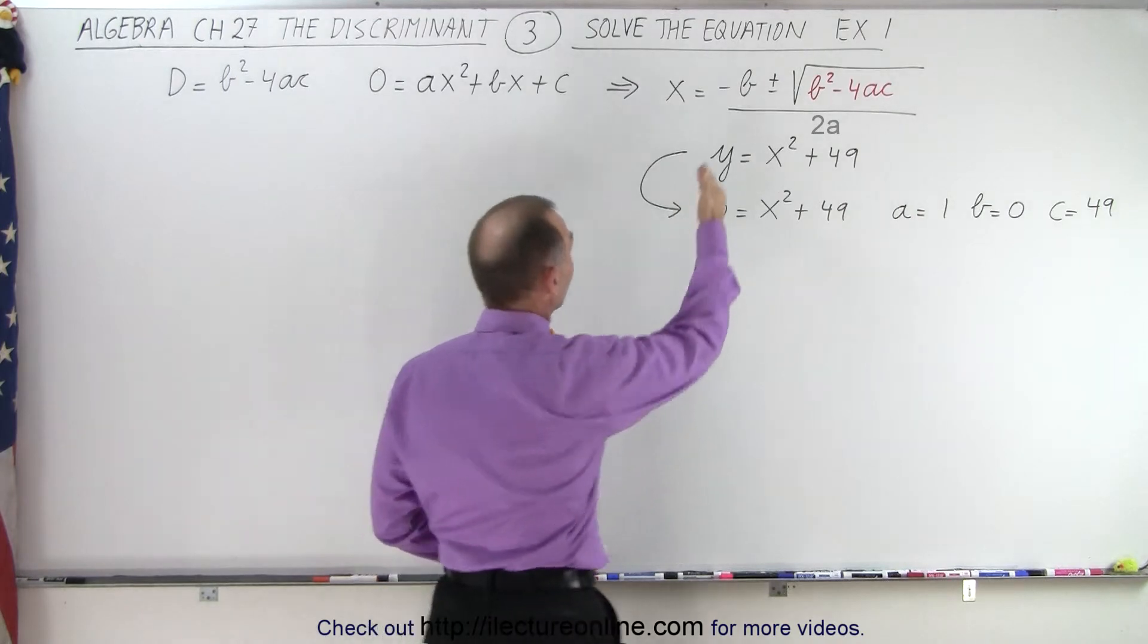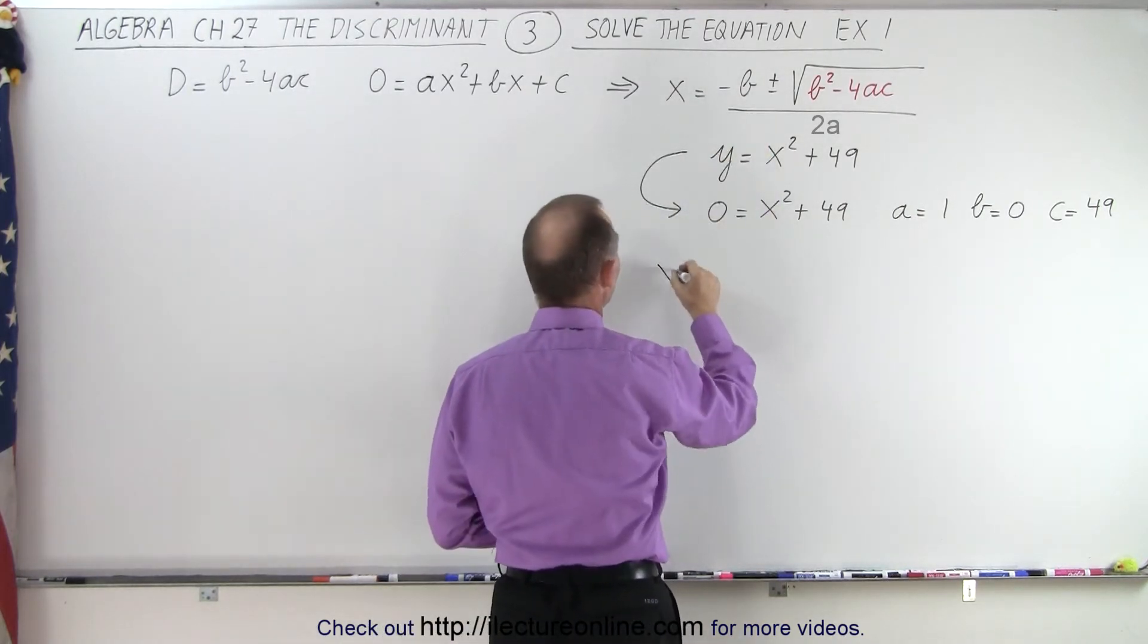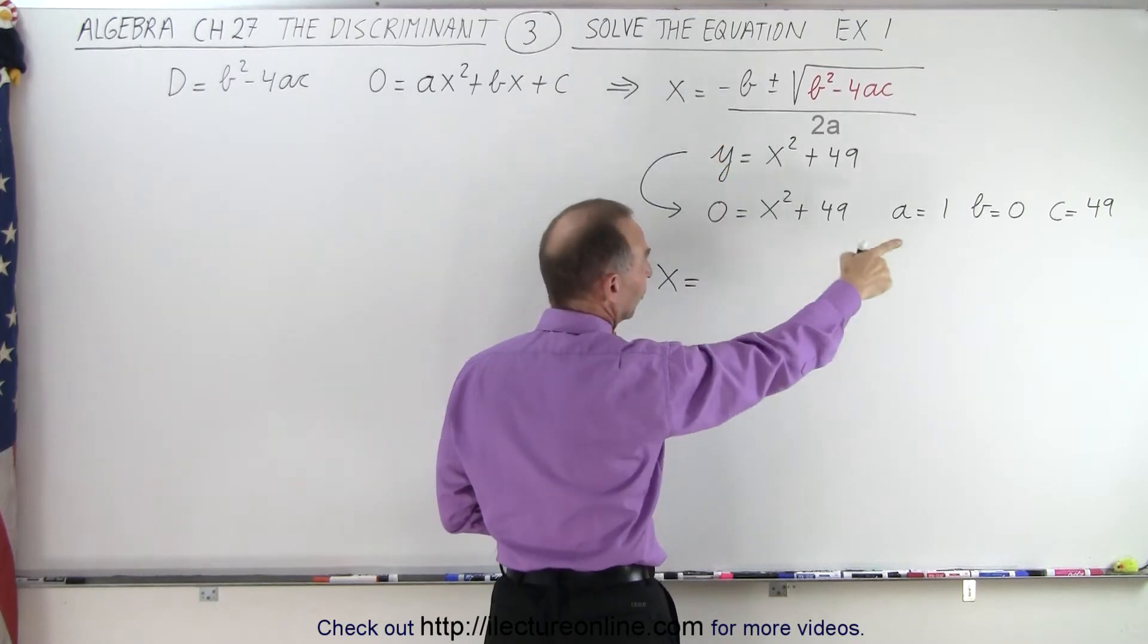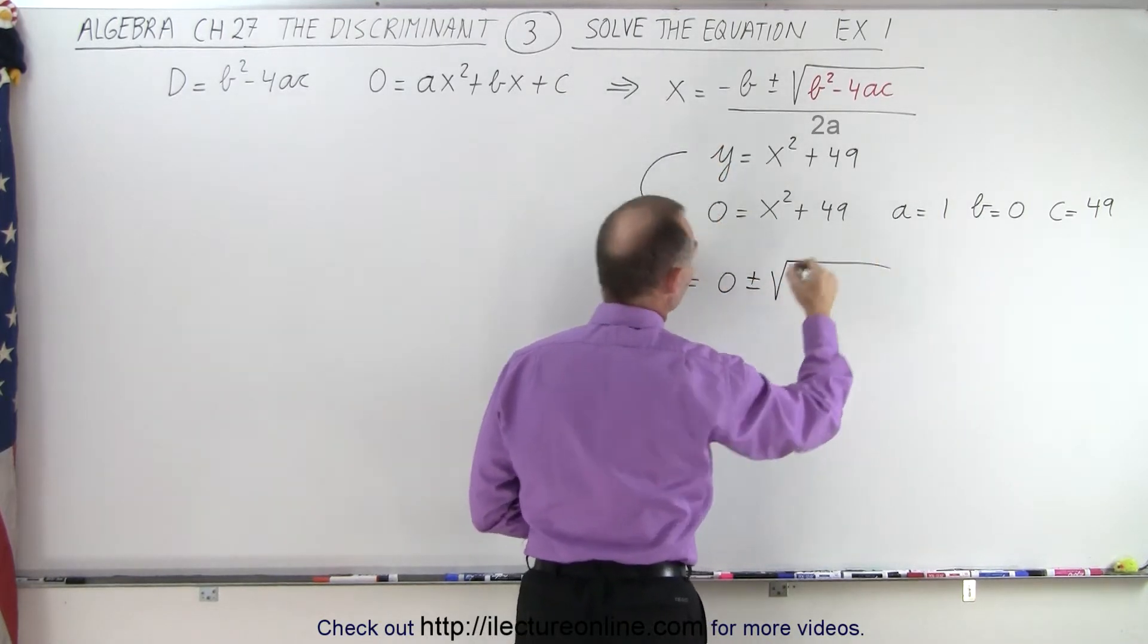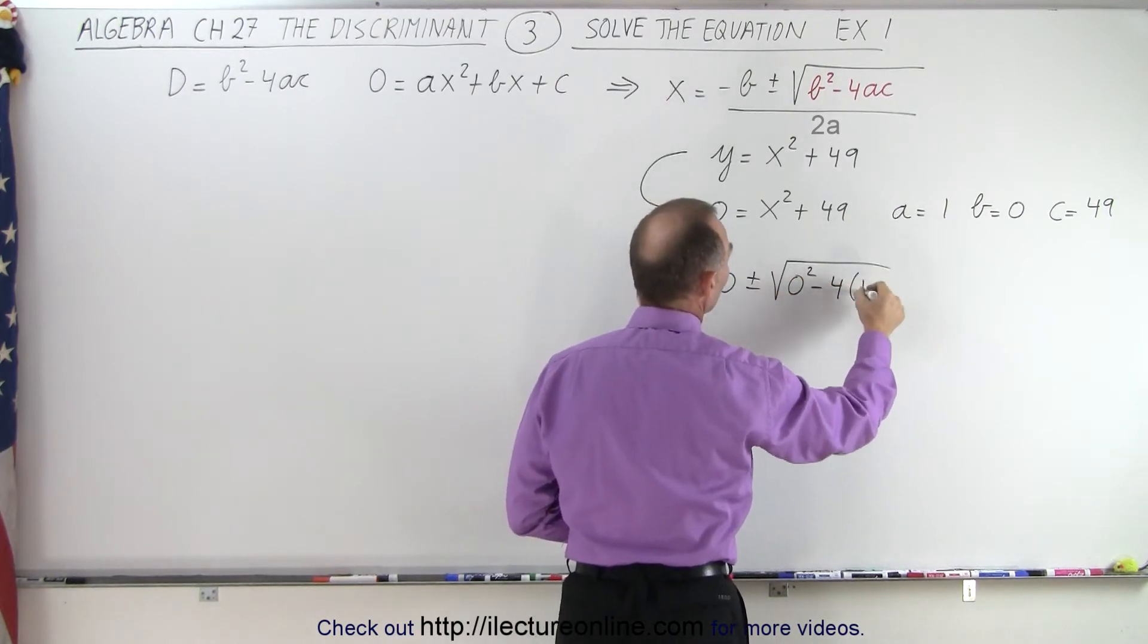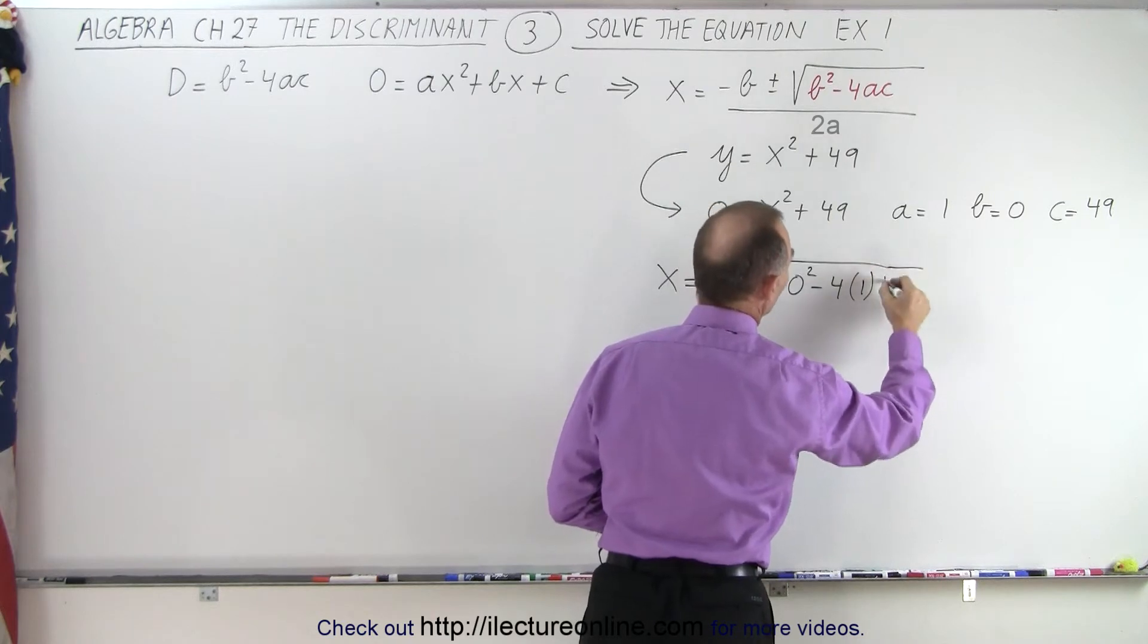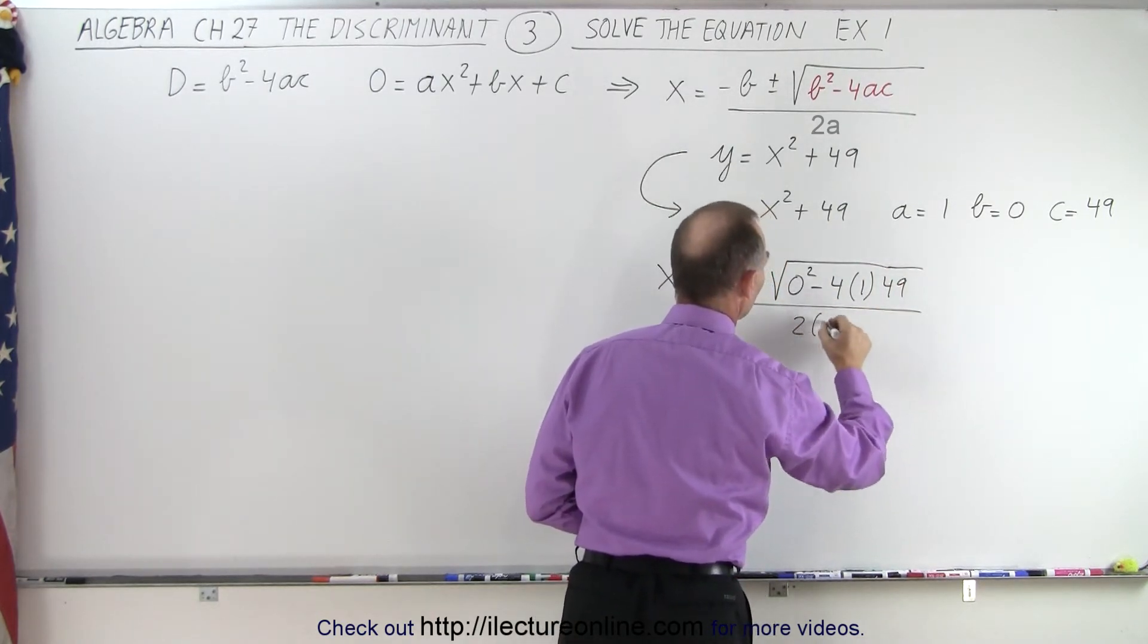Using the quadratic formula, we get x = (b ± √(b² - 4ac))/(2a). Since b = 0, this becomes x = (0 ± √(0² - 4(1)(49)))/(2(1)).